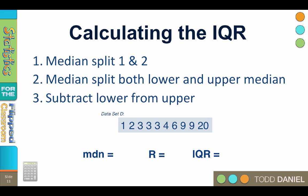To calculate the interquartile range requires three steps, although you can think of this as doing the same step three times. First, you do a median split on the upper and lower half of the distribution. Because the median is between three and four, we average to get a median of 3.5.